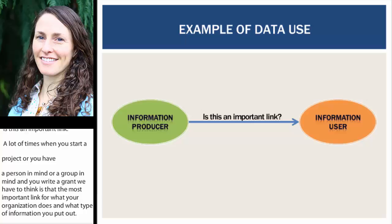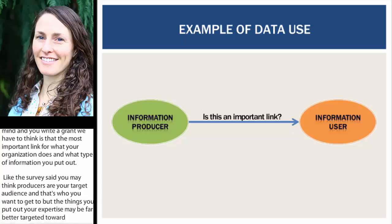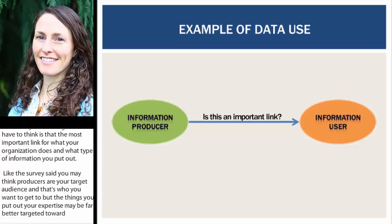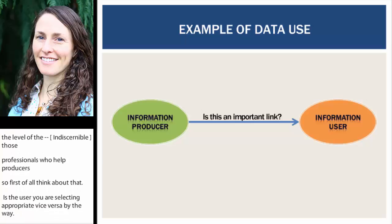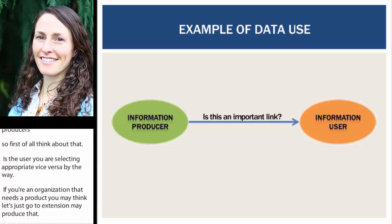You might be looking at NRCS, districts, or those professionals who help producers and can distill that information into the proper format. First of all, think about whether the user you're selecting is appropriate. And vice versa — if you're an organization that needs a product, you may think you should just go to Extension since they produce it. Well, maybe not. There may be a different organization or a specific sector of the university that is more appropriate. This goes both ways.